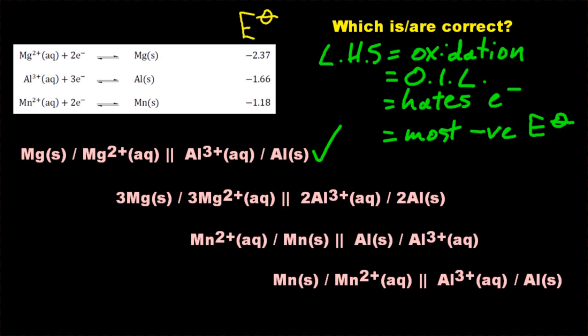For the second one, there are coefficients. You don't have coefficients in this cell notation, so that one must be wrong. For the third one, the solids are next to the salt bridge - that's wrong, you need to have the aqueous solutions.